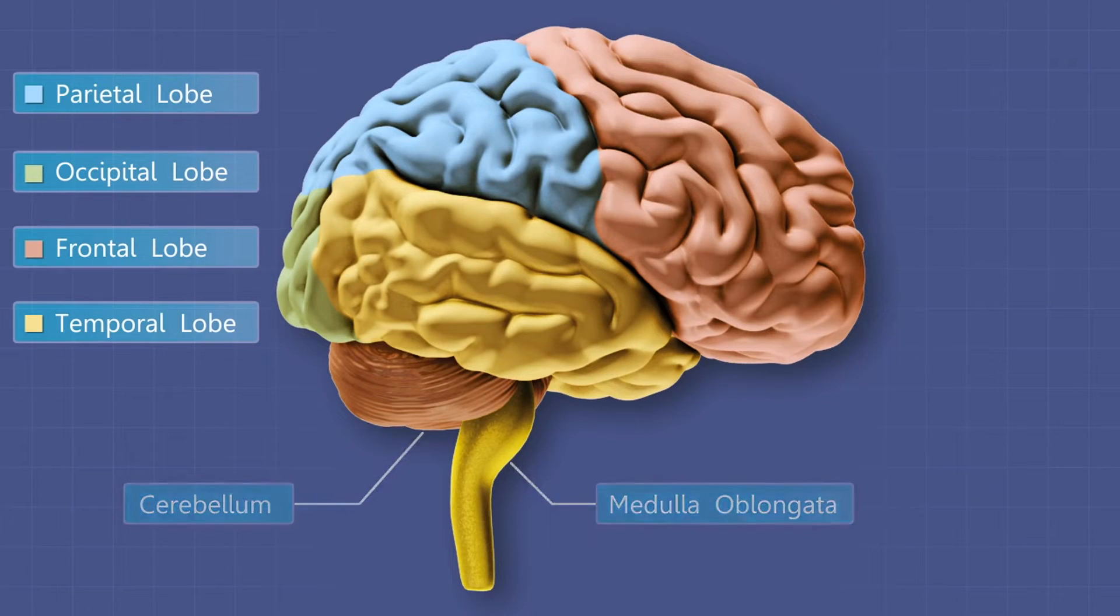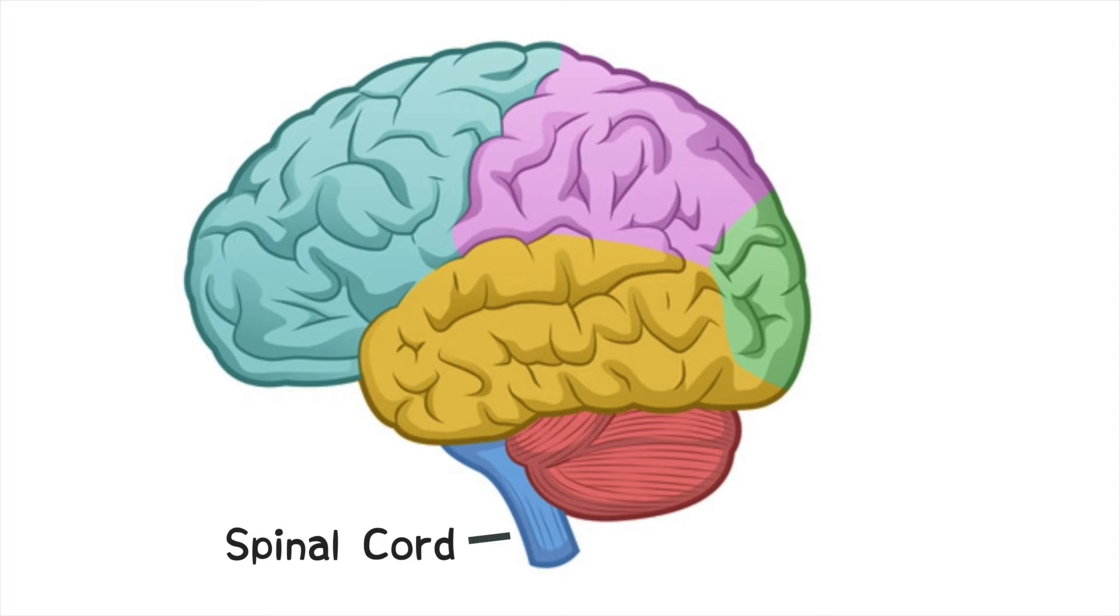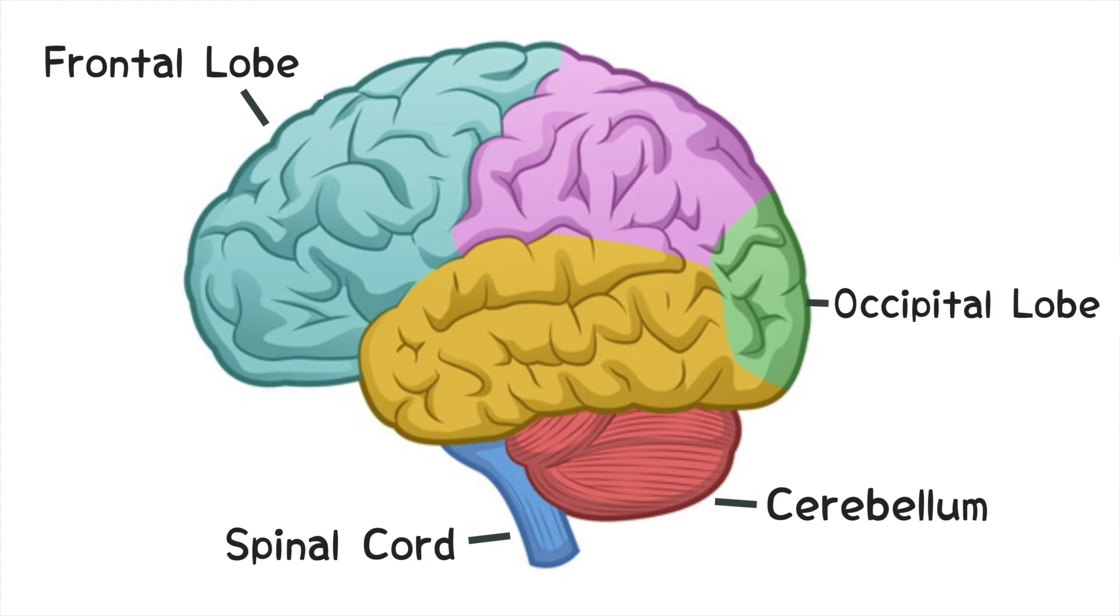But first, let's do a quick review. Alright, so we have the spinal cord, the cerebellum, frontal lobe, occipital lobe, temporal lobe, and the parietal lobe.